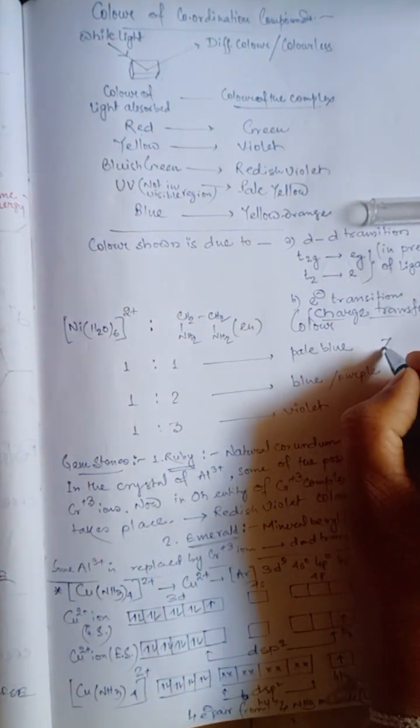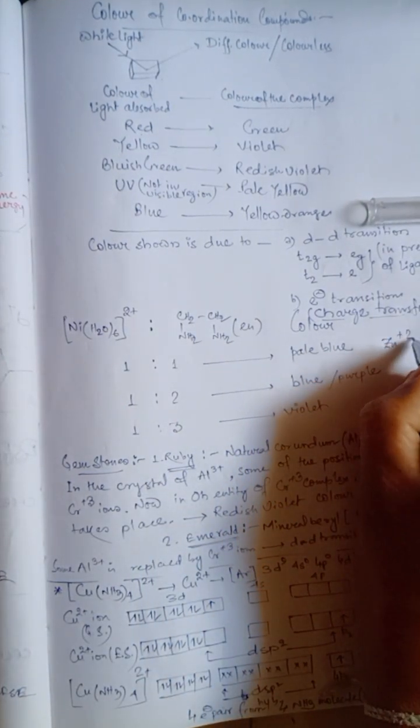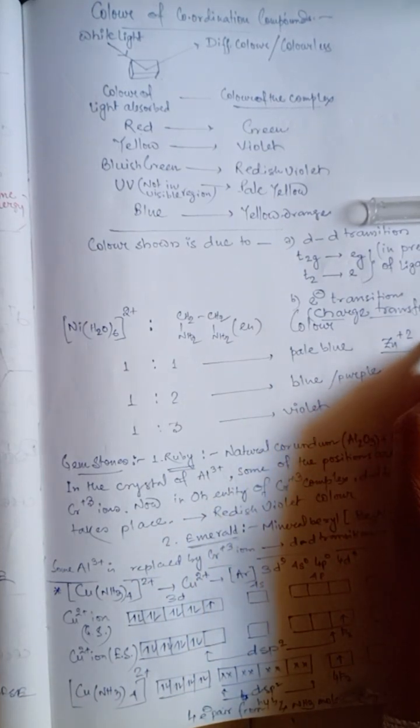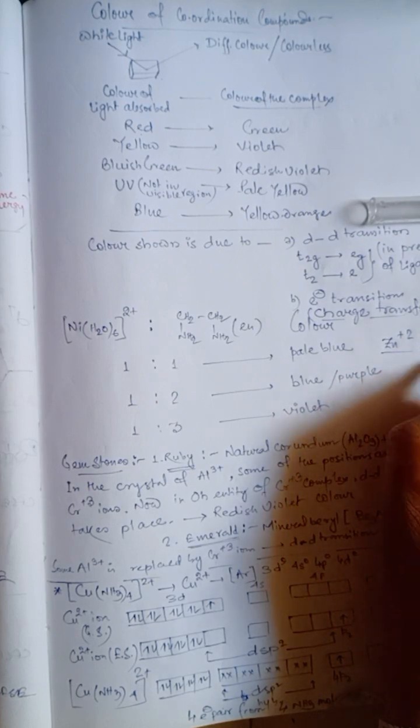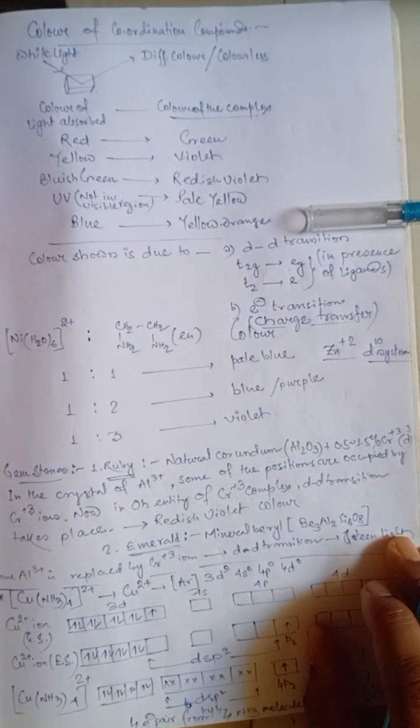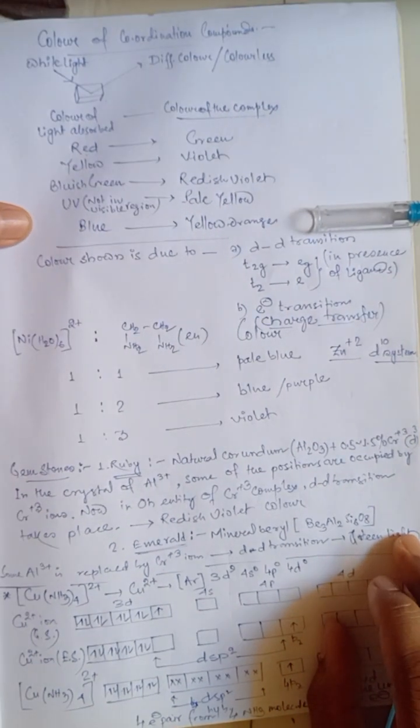Now, in case of zinc 2 plus ion, all the D set, that is T2G and EG, are filled with paired electron. So, there is no chance of d-d transition here.